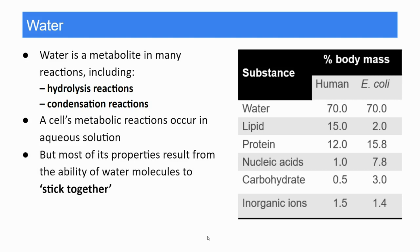If you look in the table you can see a comparison between humans and E. coli, so eukaryotes and prokaryotes, and you can see the importance of water. It is by far the largest amount or percentage of body mass of both organisms, whether multicellular or unicellular.